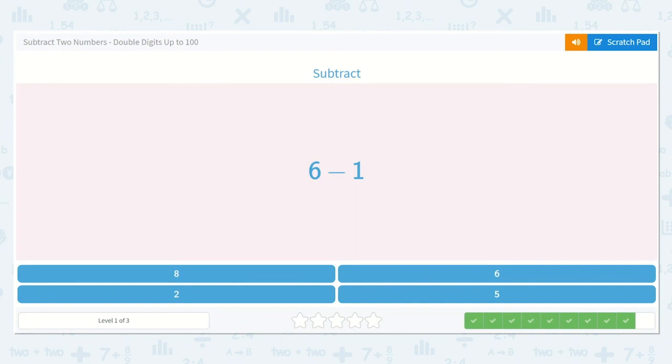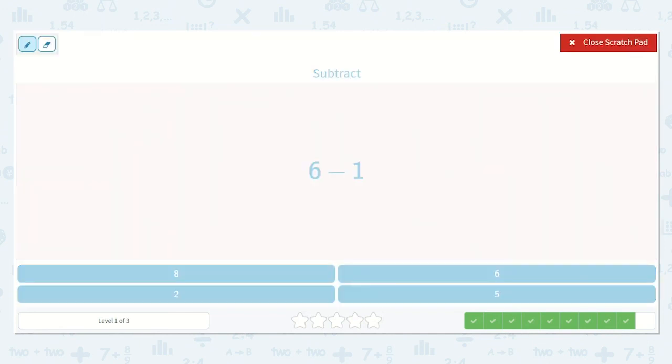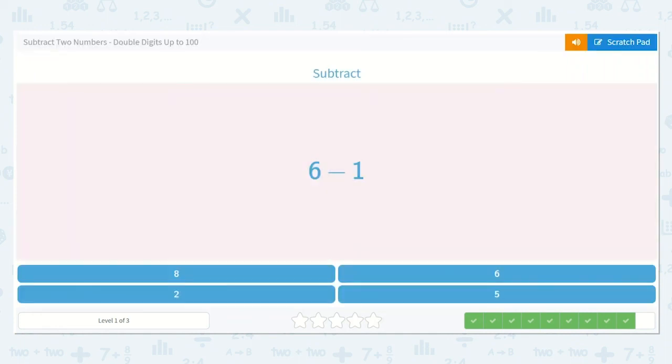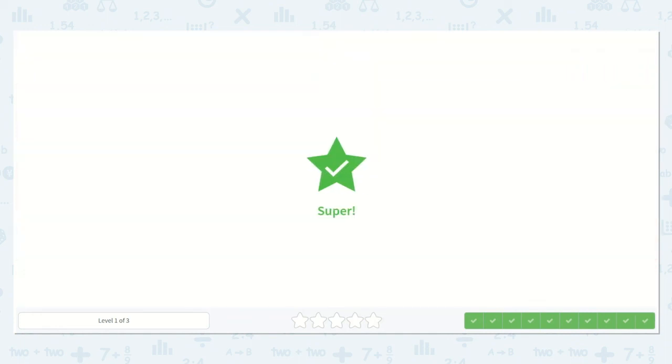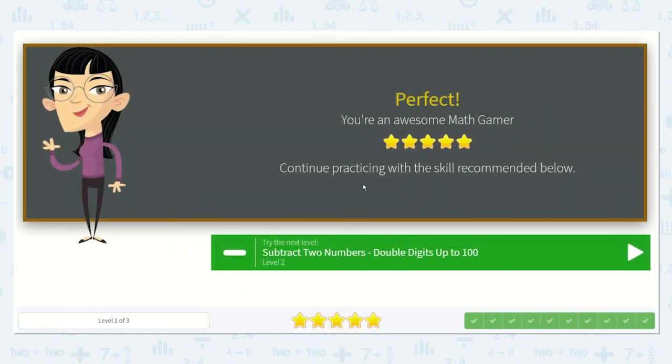Now we have 6 minus 1. I could draw dots for this, or I could look at it and think, well, if I drew 6 dots and then I crossed one of them off, I would just have 1 less than 6. What is 1 less than 6? The number right before 6. Yes, 5. So 6 minus 1 is equal to 5, which is right here. Thank you for all the help, friends.